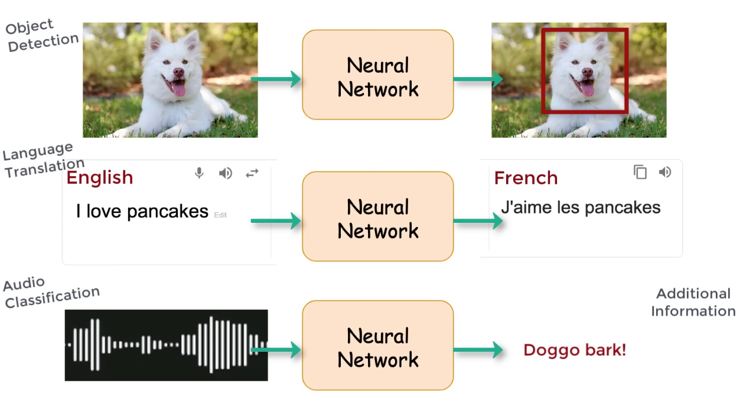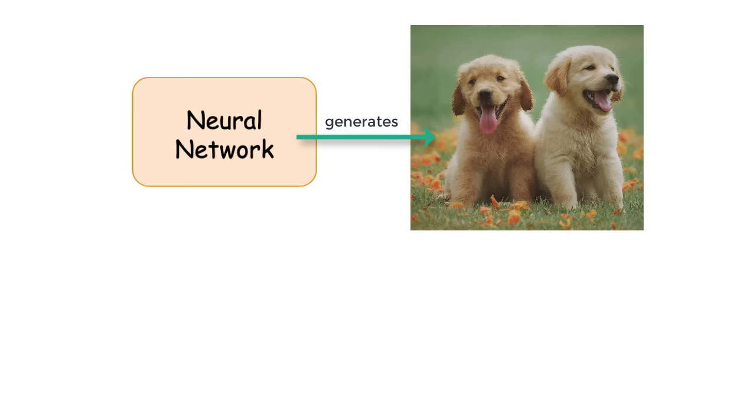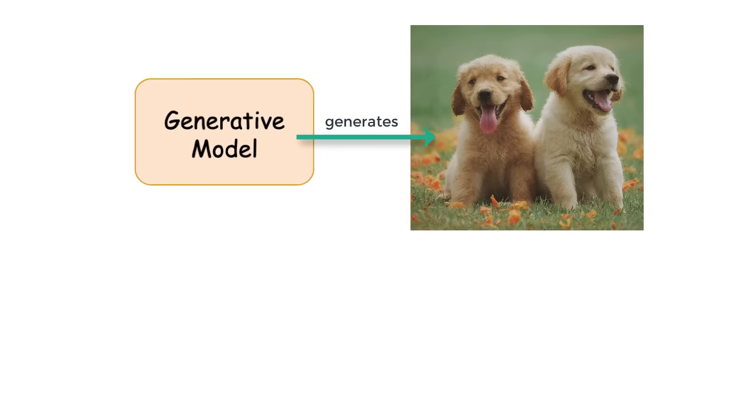However, there are a category of networks that are a bit different, in the sense that they don't merely provide additional information about some input sample, but they also try to create or generate some sample image or audio or text themselves. And this class of neural networks is called generative models, appropriately named.